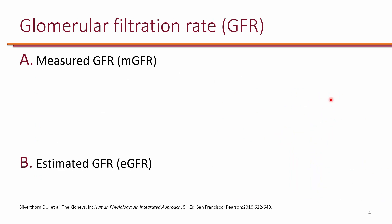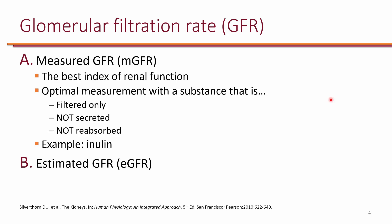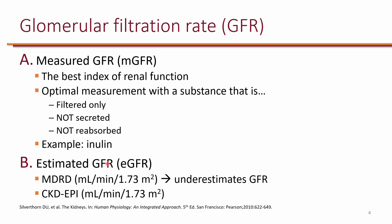The best way to assess renal function is to measure glomerular filtration rate or GFR. You can either measure GFR or estimate it using equations. Measured GFR is the best index of renal function, and we want to use a substance that is filtered only — not secreted and not reabsorbed. Inulin is clinically available and used primarily by nephrologists, but it's expensive and not readily available outside of nephrology. Therefore, we often estimate GFR using equations such as MDRD and CKD-EPI.